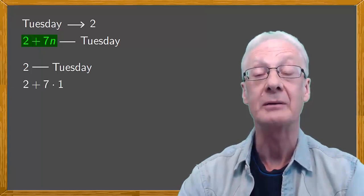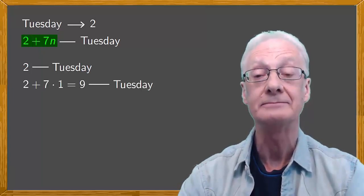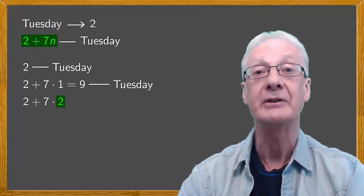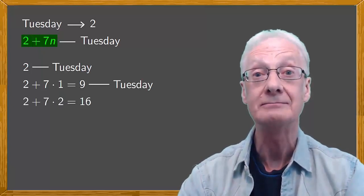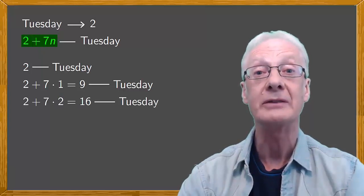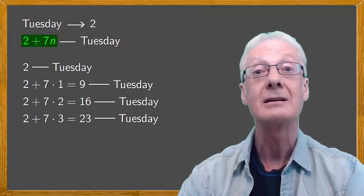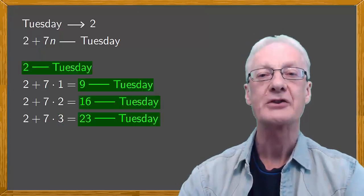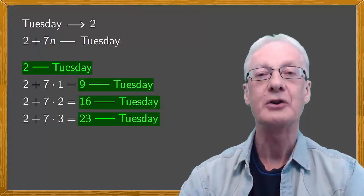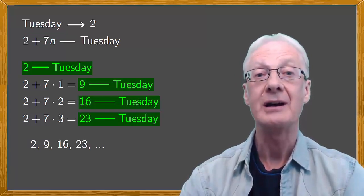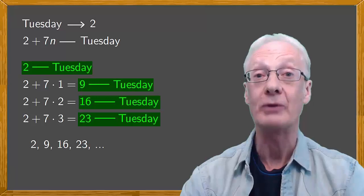We get Tuesday with two and also we put any integer value for n in two plus seven n. So we get Tuesday when n equals one, giving two plus seven times one equals nine. When n equals two, giving two plus seven times two equals 16. When n equals three, giving two plus seven times three equals 23. And so on. So when it comes to days of the week, two, nine, 16 and 23 amount to the same thing. They all represent Tuesday.